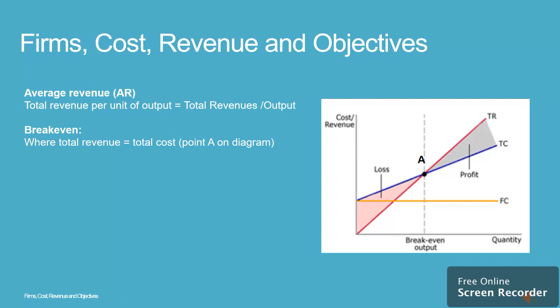Breakeven. Where total revenue is equal to total cost, as seen in point A of the diagram, the firm neither makes a profit nor suffers a loss. We call this breakeven.